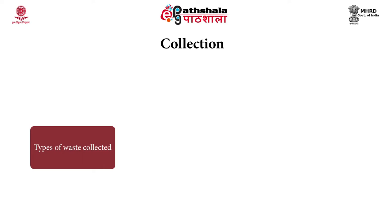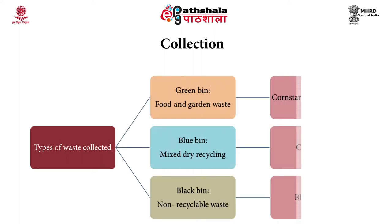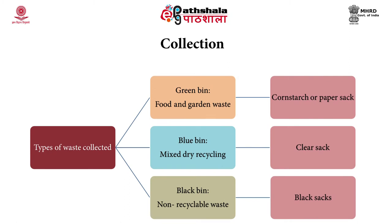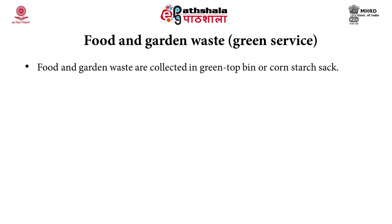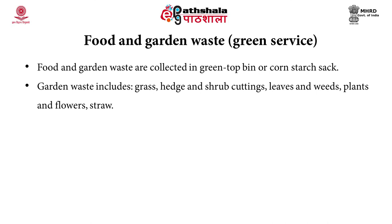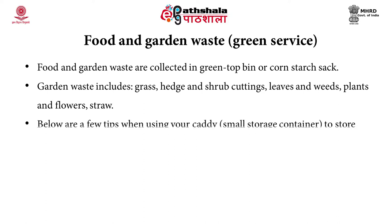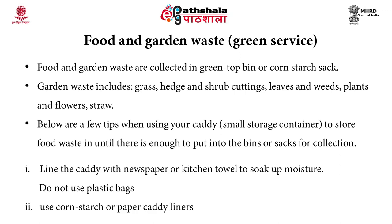In the collection step, different colored bins are used where collected waste can be segregated. The green color bins are for food and garden waste, the blue color bins are for mixed dry recycling, and the black color bins are for non-recyclable waste. Food and garden waste are generally collected in corn starch sacks or green top bins. Garden waste includes grass, hedge and shrub cuttings, leaves and weeds, plants and flowers, and straw materials.